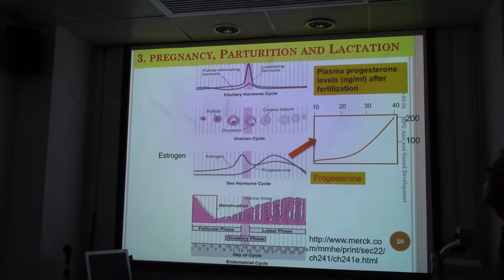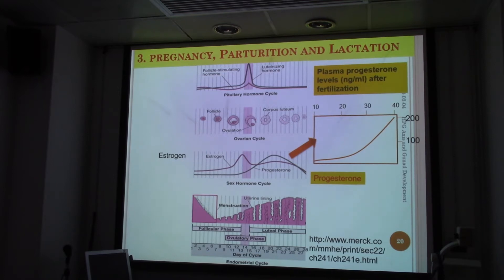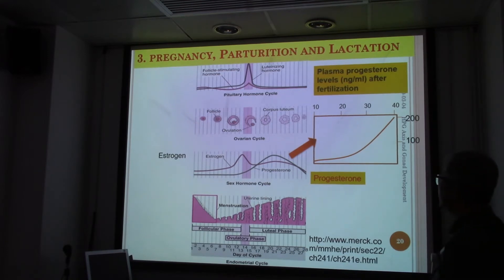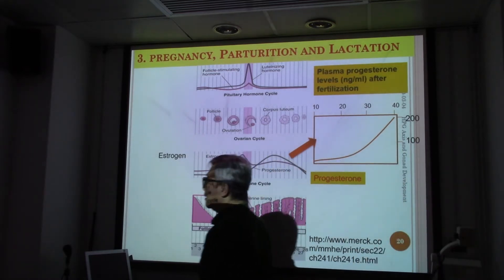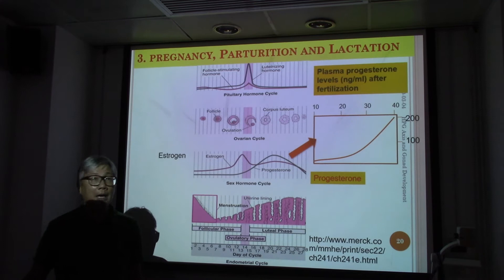GnRH controls the ovaries to produce estrogen and control ovulation. After ovulation, the corpus luteum would be forming and then regressed. The egg could be fertilized, and then progesterone comes out at high levels to prepare the uterine lining after fertilization, so the fertilized egg can embed onto it.